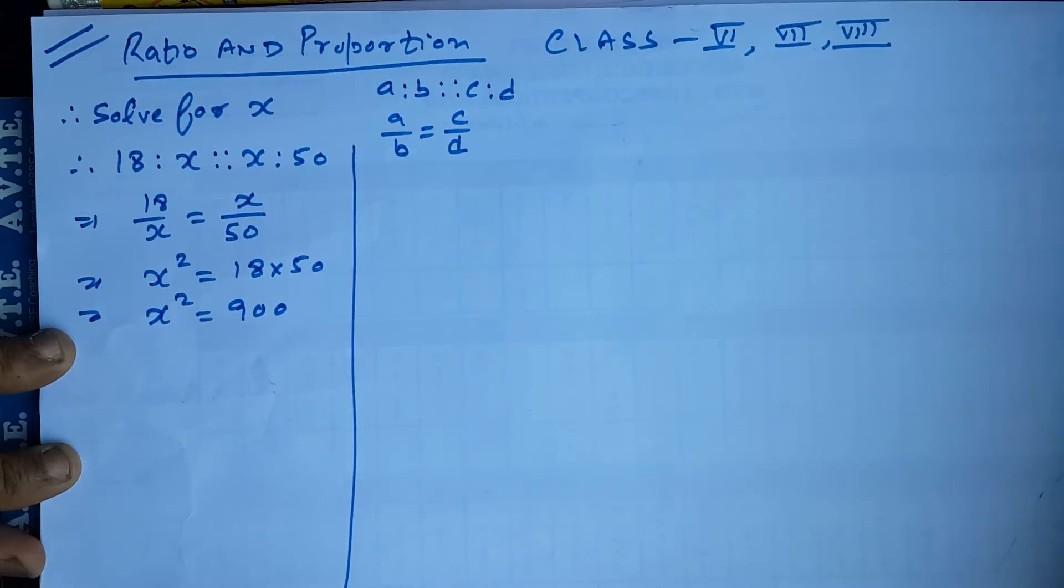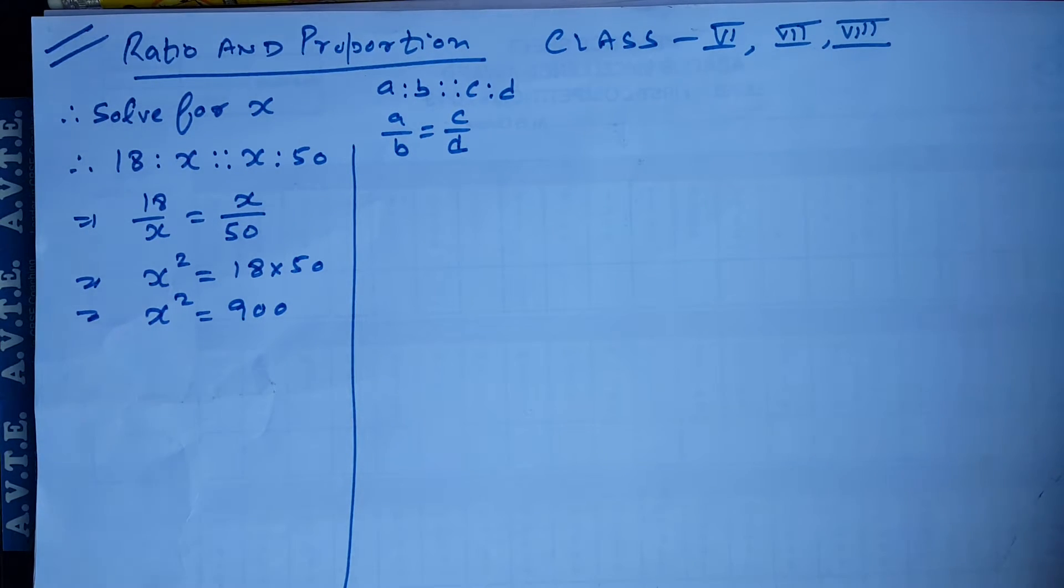Now, for class 6 students, it is very difficult, rather for class 7th also, it is very difficult to find the root of 900. The class 8th student can do it because in class 8th we will learn the chapter square and square roots. So how to do, how to deal with class 6th and 7th child.